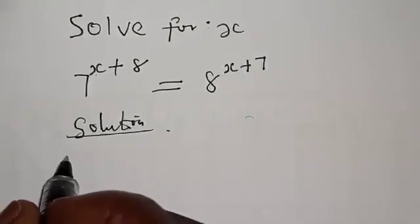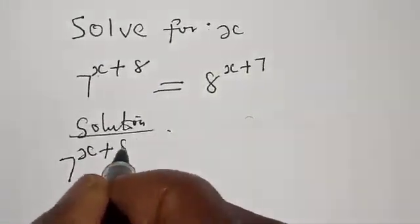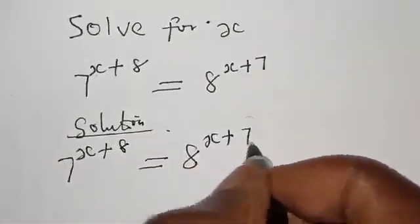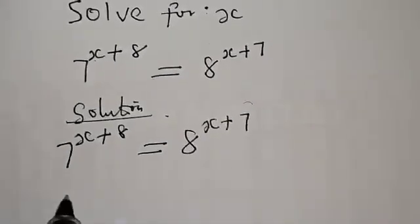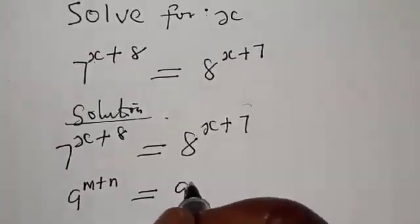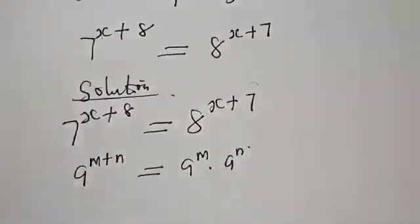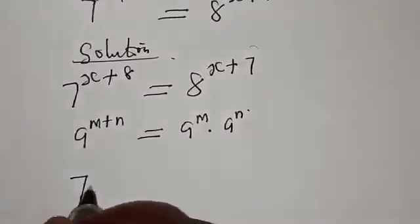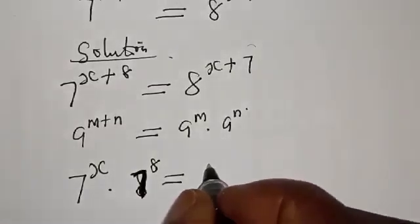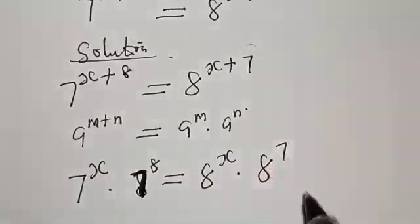Solution. We have 7 raised to power x plus 8 is equal to 8 raised to power x plus 7. We recall that if you have a raised to power m plus n, it is the same thing as a raised to power m multiplied by a raised to power n. Then the whole of this equation can be rewritten as 7 raised to power x multiplied by 7 raised to power 8 is equal to 8 raised to power x multiplied by 8 raised to power 7.